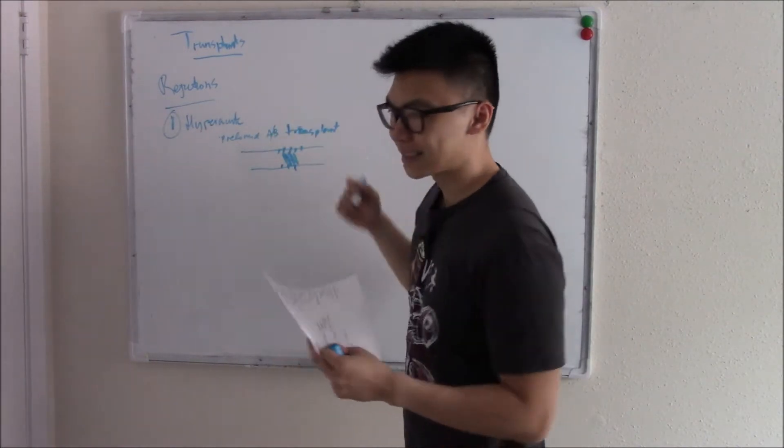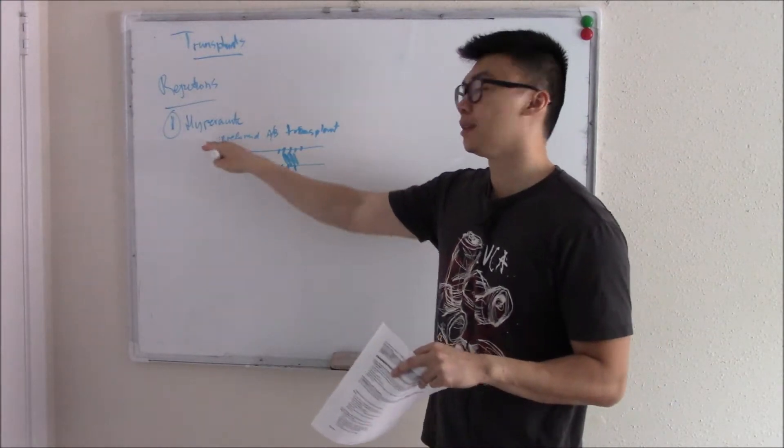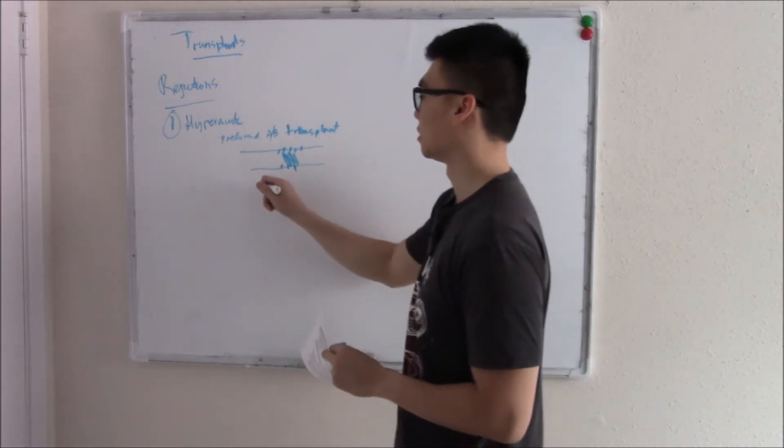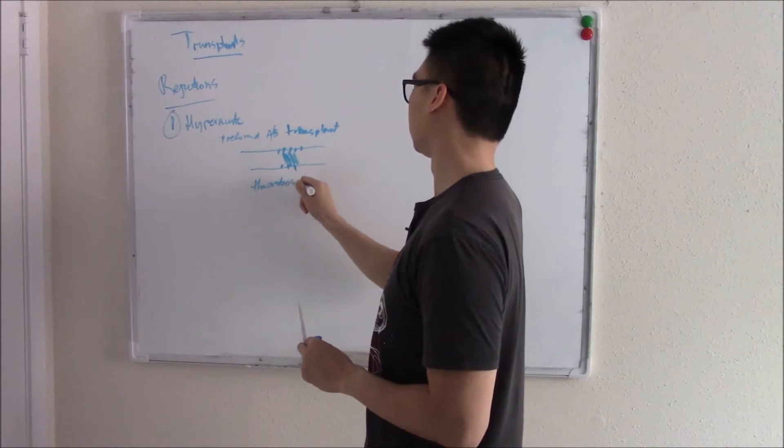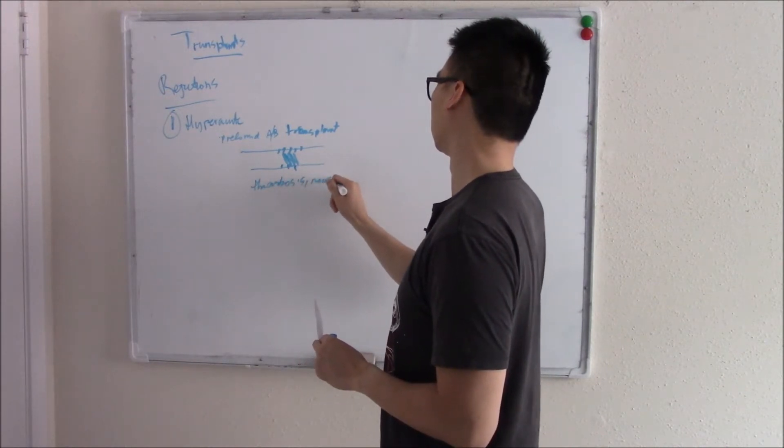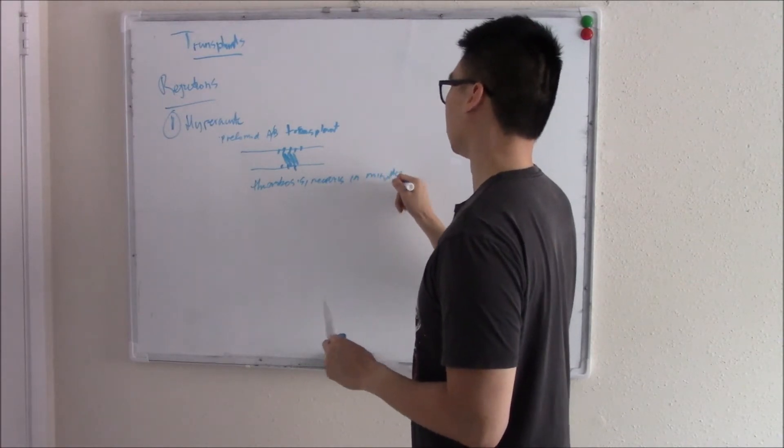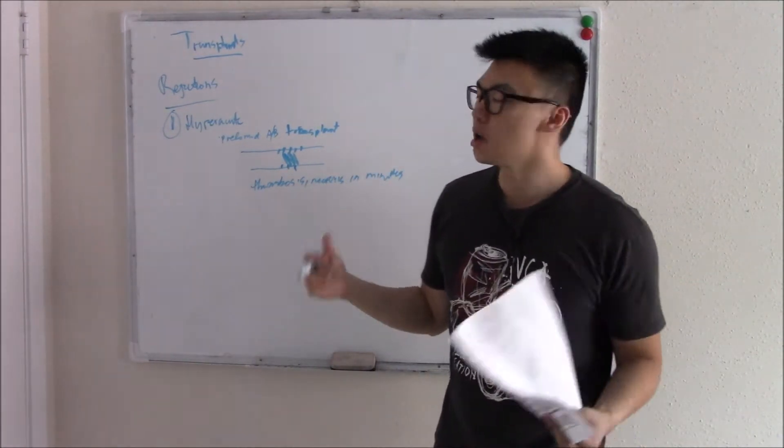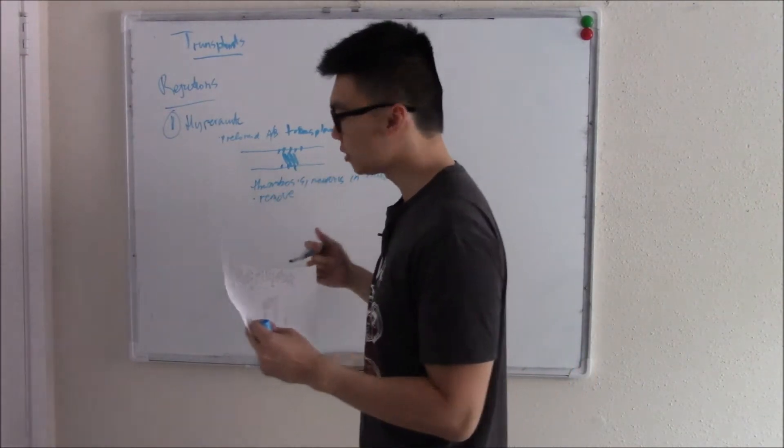When your endothelium gets damaged, you can cause thrombosis. Thrombosis, blood doesn't get through, you get ischemia, death of the tissue, death of the transplant, literally within minutes. Thrombosis, necrosis in minutes. What do you do? The transplant's shot. You have to remove the transplant. Very sad, but you've got to do it.